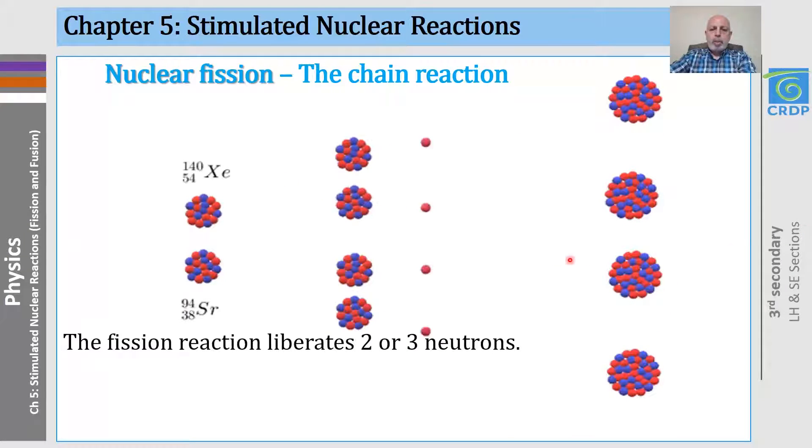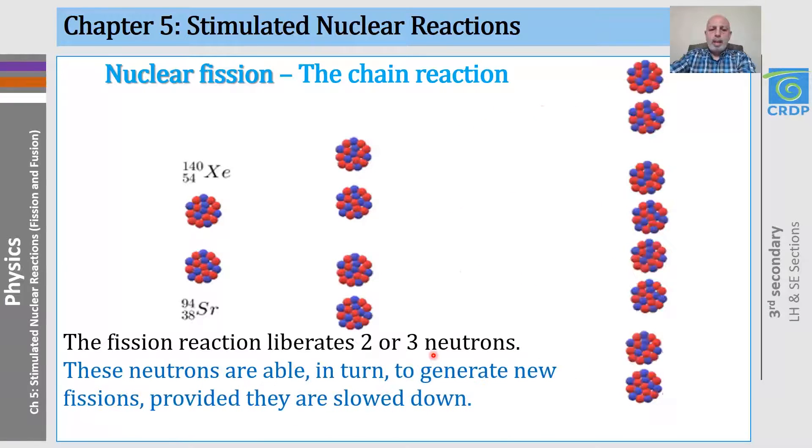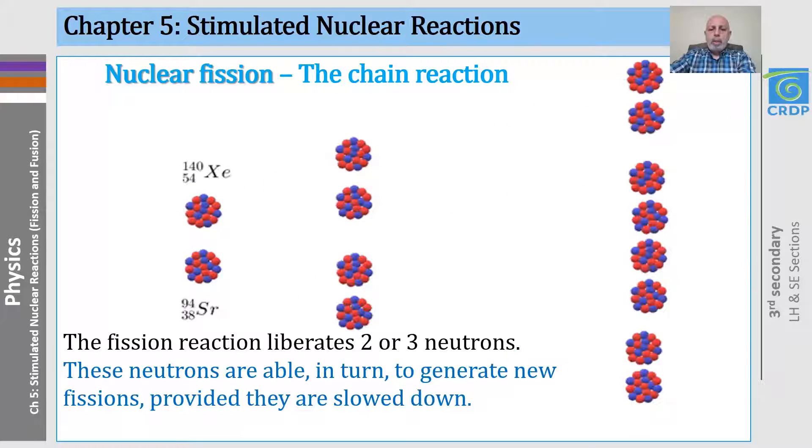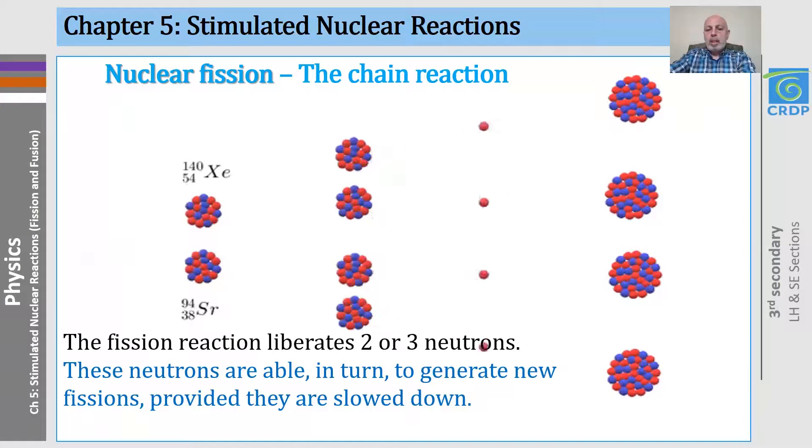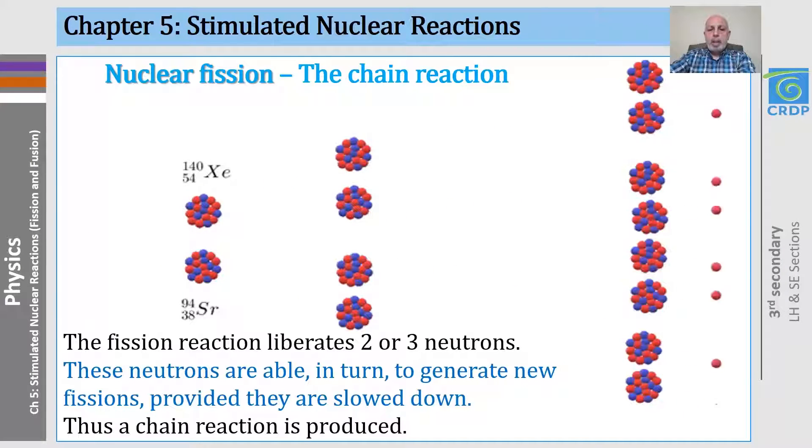The fission reaction liberates two or three neutrons, and these neutrons are able in turn to generate new fissions, provided they are slowed down, of course. Thus, a chain reaction is produced.